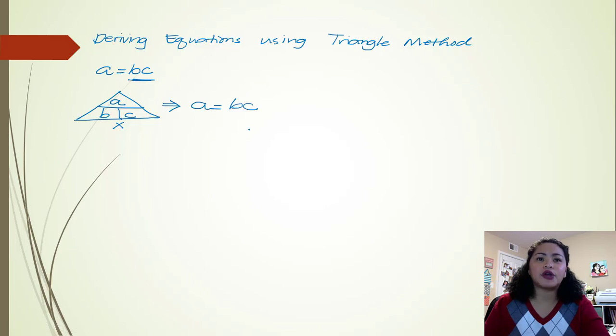And so what if we are going to solve for B? What would be our equation? So we're going to look for B. And as you can see here, A and C are the variables left. So A is on top, and then C is here in the bottom. So that means this is division. So A divided by C.